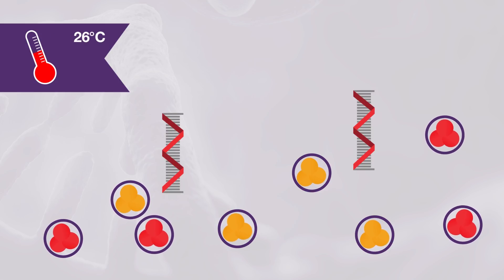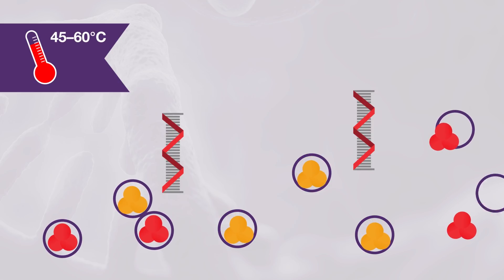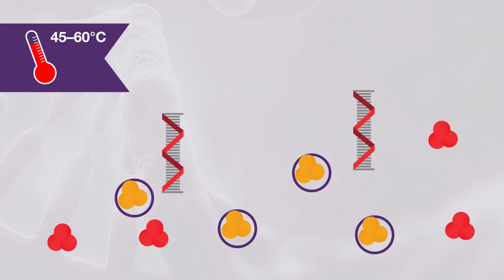During the first hot-start activation phase at around 45 degrees Celsius, the RT blocker dissociates from Superscript 4 reverse transcriptase and the first strand cDNA synthesis is initiated. At this temperature, Platinum SuperFi DNA polymerase is maintained inactive through its strong hot-start mechanism.